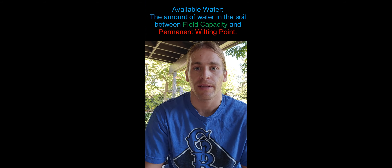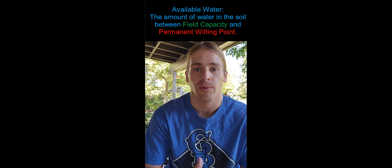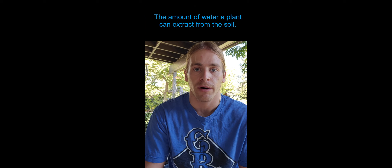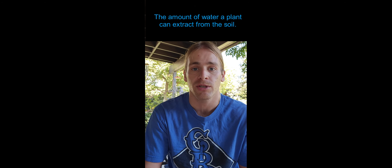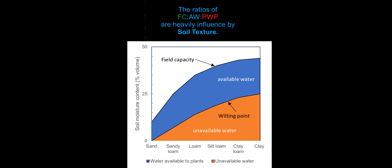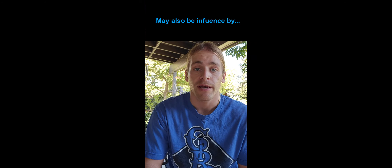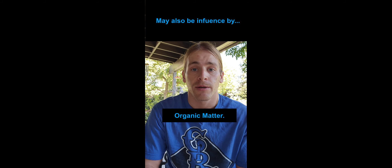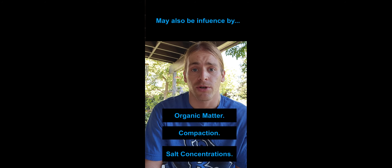The amount of water that lies in between permanent wilting point and field capacity is called plant available water. This is how much water the plant is actually able to pull from the soil without going through any kind of stress. The ratios of field capacity versus available water versus permanent wilting point differ between soil textures. However, they can also change due to organic matter content, compaction levels, and salt concentrations.